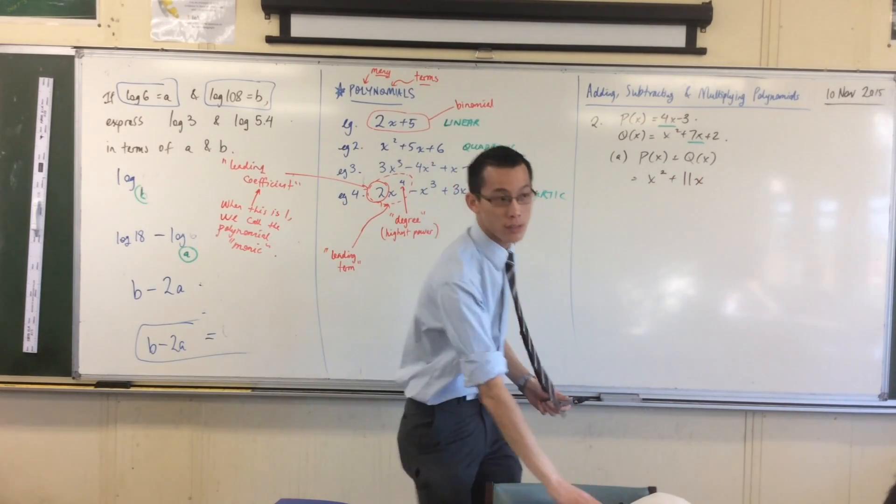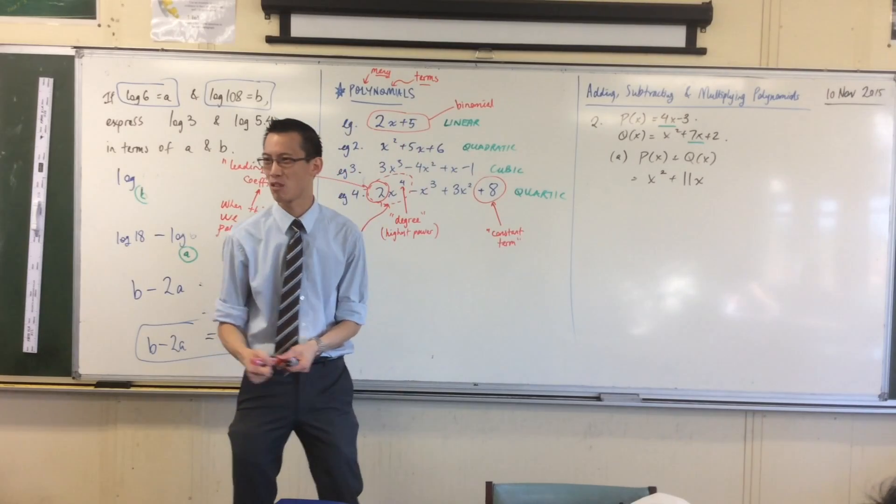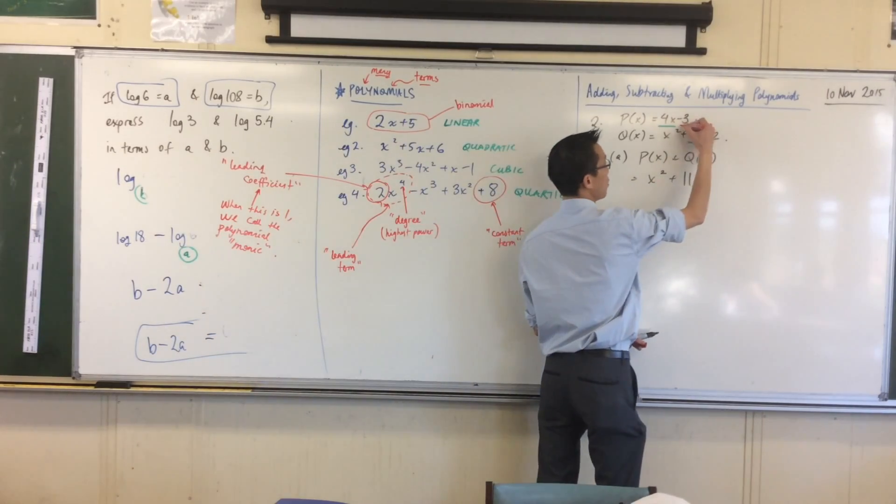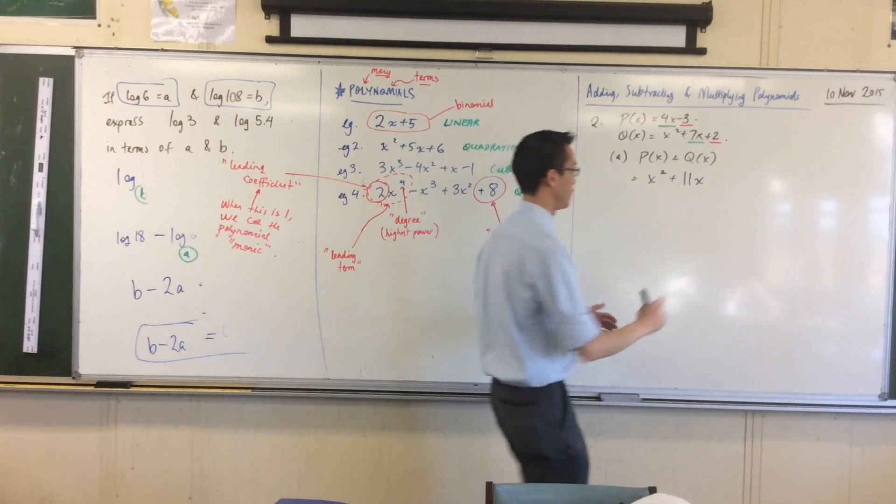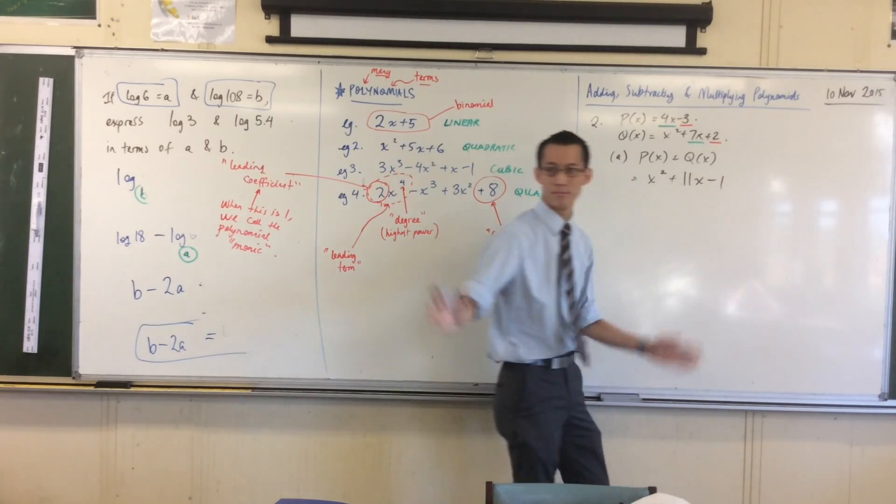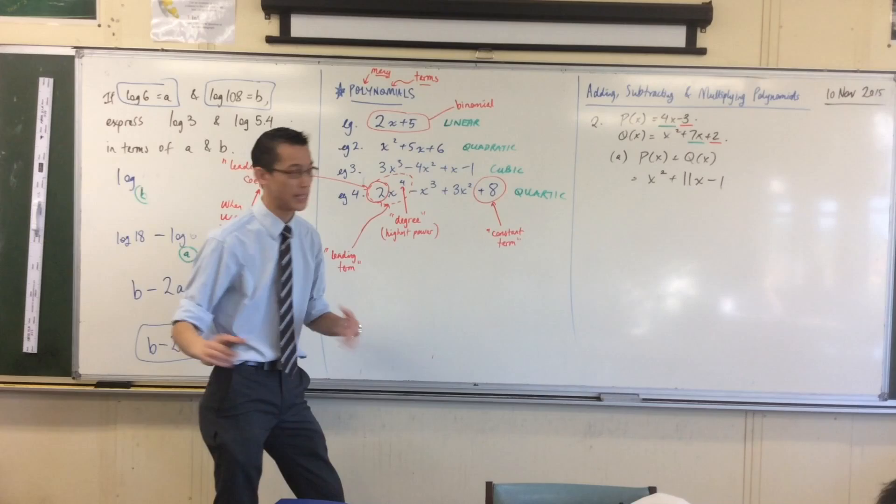And lastly, I've got a constant term. I've got a constant term in each one. Again, I'm going to pair them up. 1, 2. When I add them, what do I get? Negative 1. No problems. That's really easy.